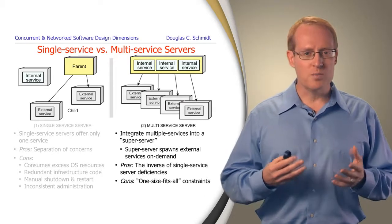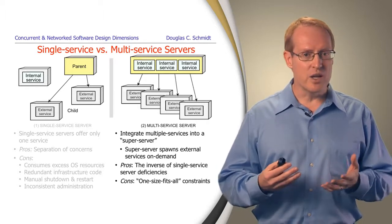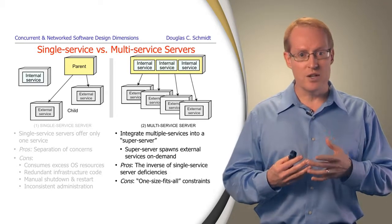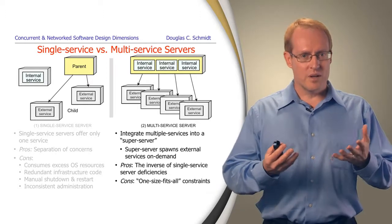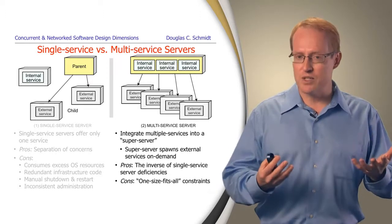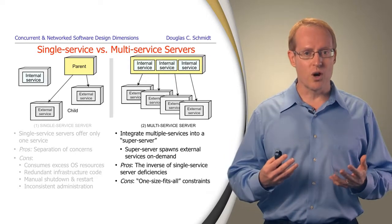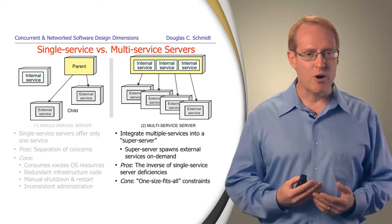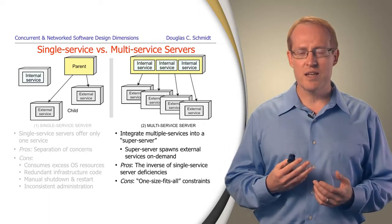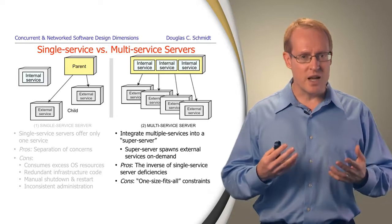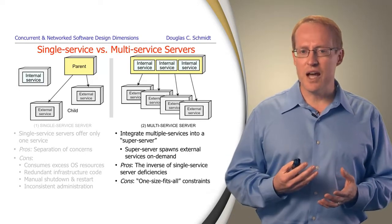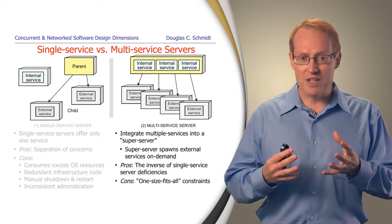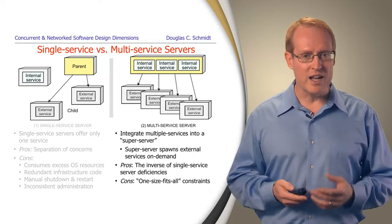An alternative approach, popularized by the INETD UNIX super server, is a multi-service server. The idea is to integrate multiple services into a super server-like structure that accepts connection requests, reads data, and spawns various services to do the work — some running internally, some externally. The pros include greater sharing and a single administration approach with automated starting, stopping, and updating of services. The downside is that services may need to fit into a one-size-fits-all configuration, which could be excessively constraining.